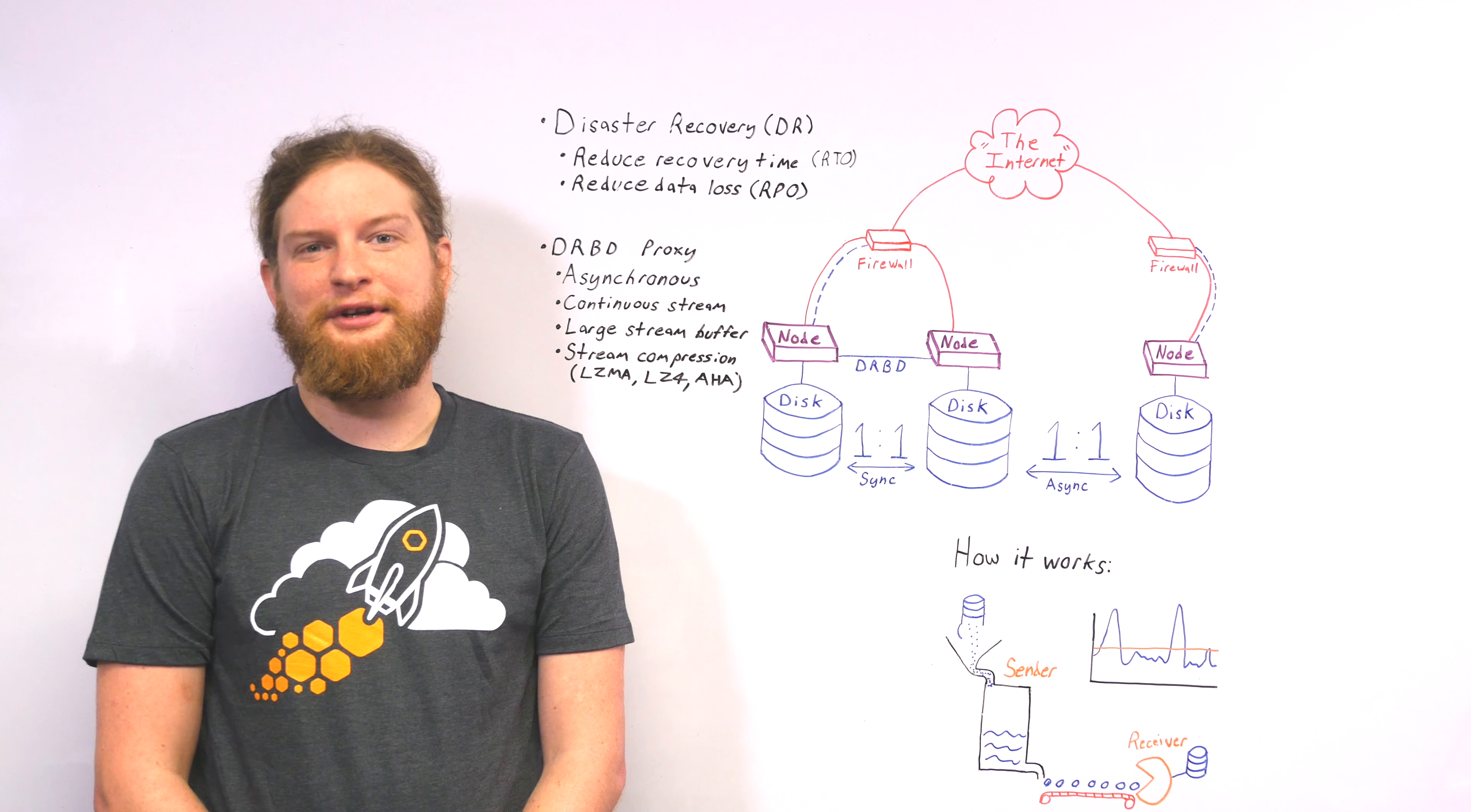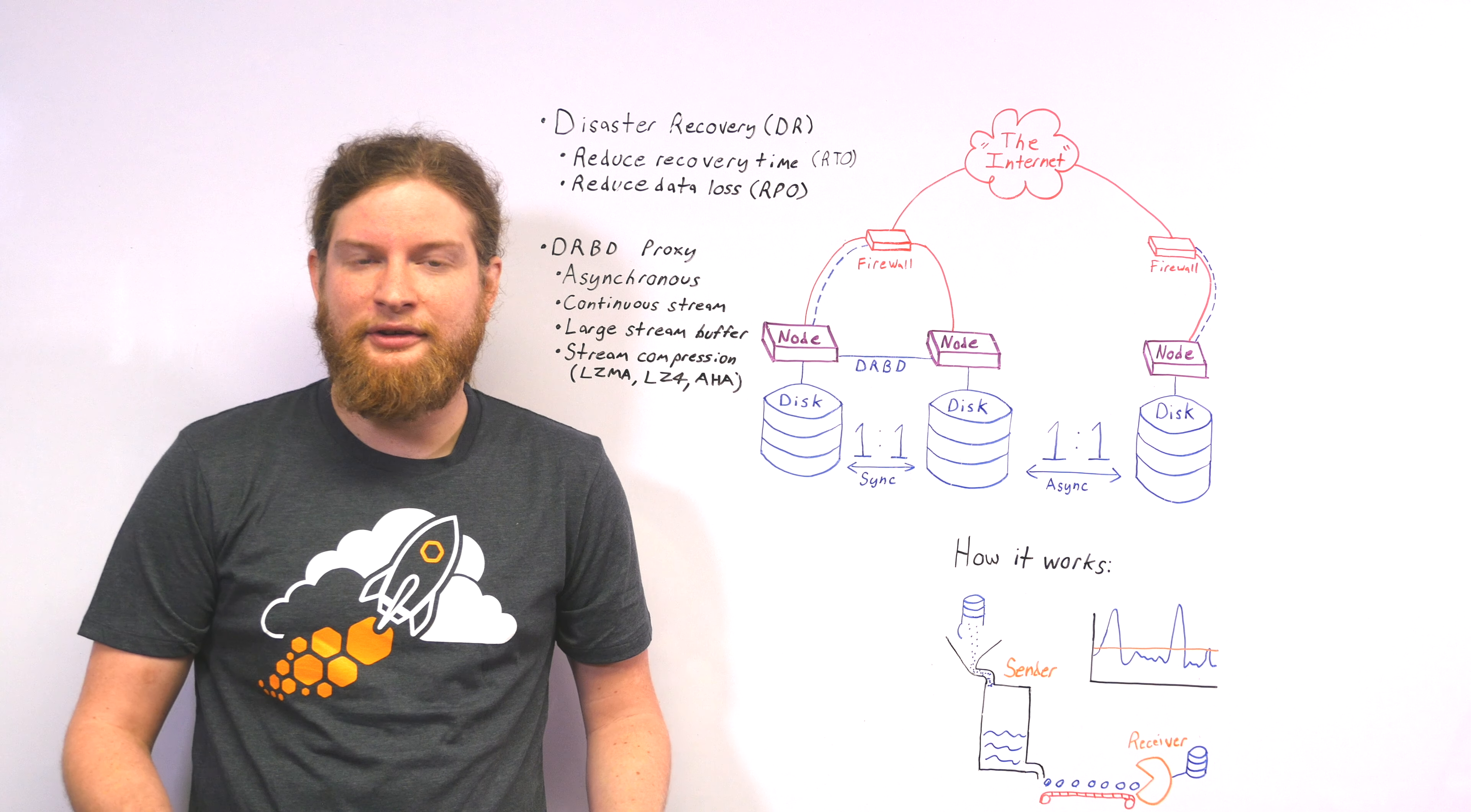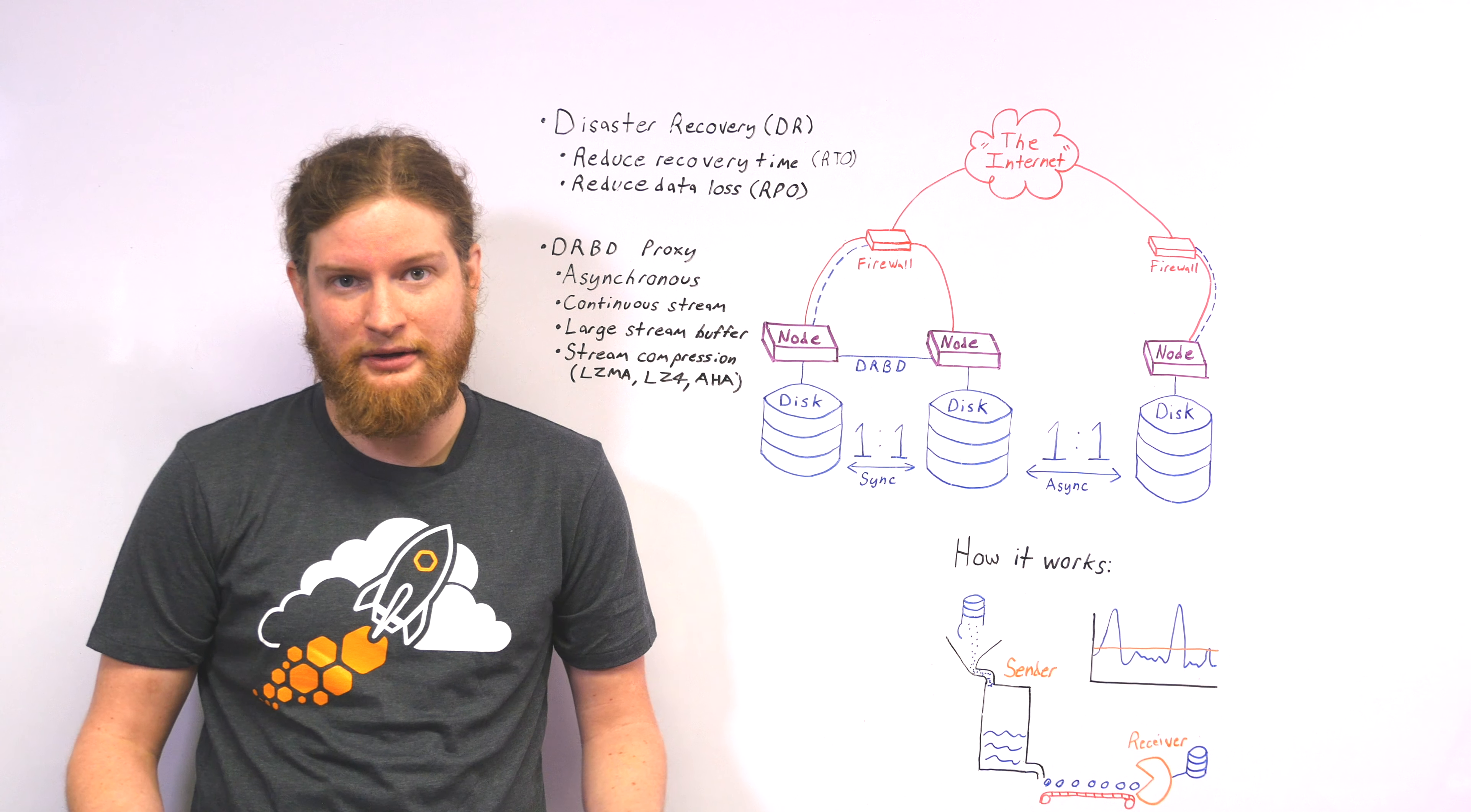What is disaster recovery? Disaster recovery is a subset of business continuity. Business continuity being a collection of policies, technologies, and practices that a business can use to survive failure of an entire site. It's part of a geo-redundancy plan. Disaster recovery itself focuses on the technical aspect of business continuity, and that's what we'll be talking about here, is the technology.